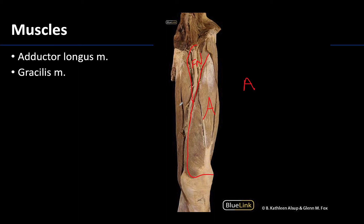In this more superficial dissection of the medial thigh you can really only see two muscles of this compartment. This large fan-shaped muscle that extends deep — you just can't see all of it — is the adductor longus muscle, and it's going to block the view of the other adductor named muscles, which we'll see in the next slide.